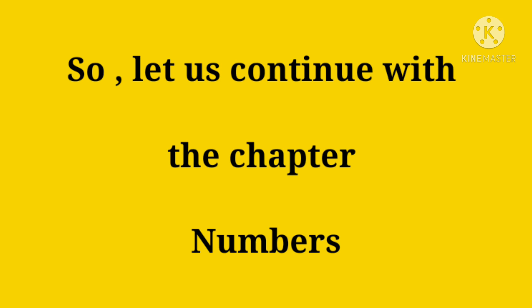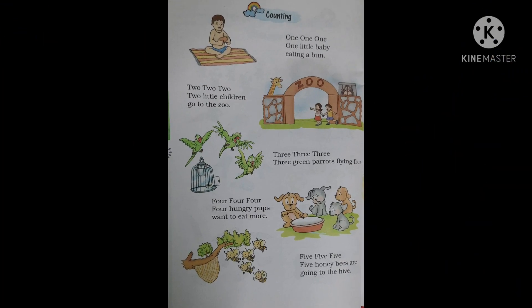First of all, let us have fun with this poem. Four, four, four — four hungry pups want to eat more. Five, five, five — five honeybees are going to the hive.